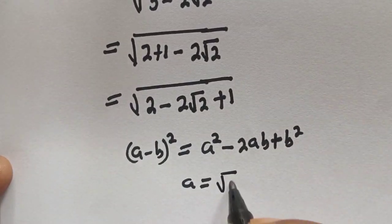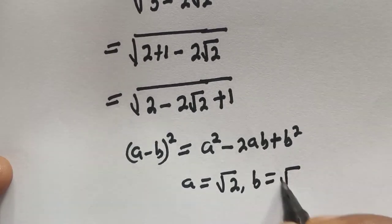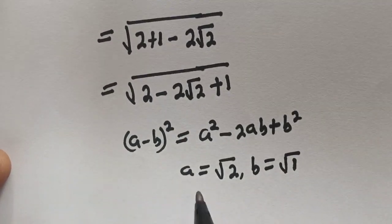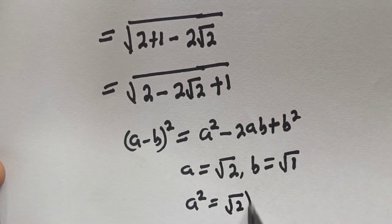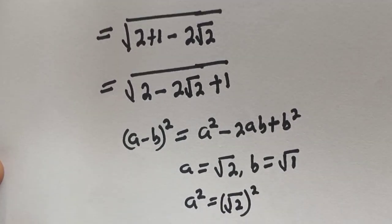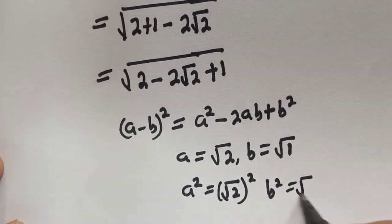Root 2, b is equal to root 1. Then a square is equal to root 2 square and b square is equal to root 1 square.